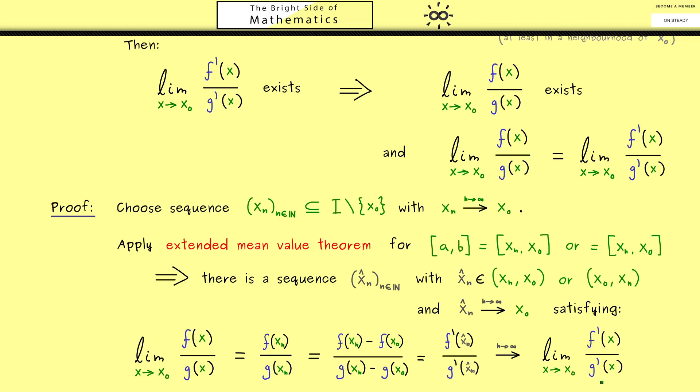If we know that this limit exists then we can conclude that also this limit exists. Hence there are no question marks left here. The existence of this limit is guaranteed by the existence of this one. And then of course we are allowed to apply this nice formula here.